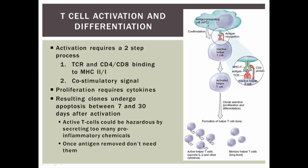Those helper T-cell clones are generals that will activate cytotoxic T-cells or B-cells to get rid of the pathogen. The resulting clones undergo apoptosis — cell death — between 7 and 30 days after activation. They don't last long, but that's okay: if they stayed active too long, they'd be hazardous because helper T-cells secrete pro-inflammatory chemicals, and we don't want too much inflammation once tissues heal. Also, once the antigens are removed, they aren't needed anymore. Memory T-cells, however, last a long time to remember what happened and mount a quick immune response if we're infected again.